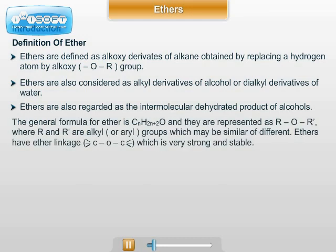The general formula for ether is CₙH₂ₙ₊₂O. They are represented as R-O-R', where R and R' are alkyl or aryl groups which may be similar or different. Ethers have ether linkage C-O-C as represented above.